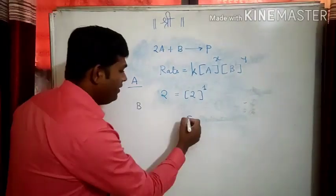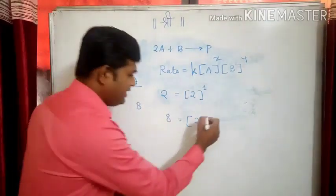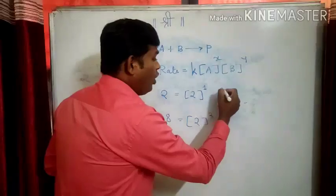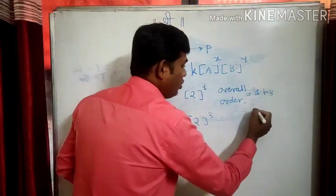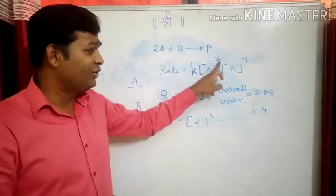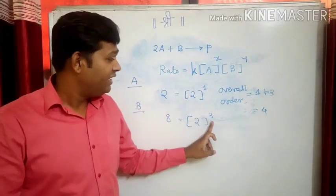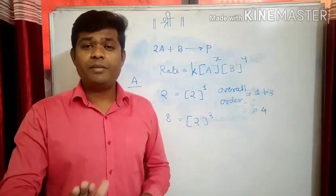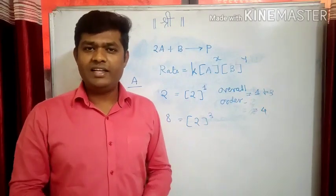Let us go for B. By doubling the concentration of B, rate increases 8 times. The power will be 3, because 2 raised to 3 is 8. So the order with respect to reactant B is 3. The overall order of reaction will be: order with respect to A is 1, order with respect to B is 3, so overall order is 4 — this is a fourth order reaction. See, the coefficient of A is 2 but the order is 1; the coefficient of B is 1 but the order is 3. Coefficients are not order of reaction.